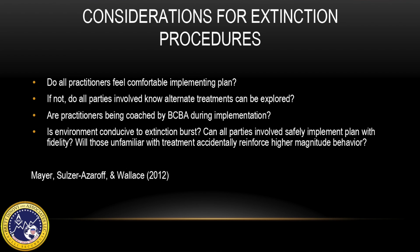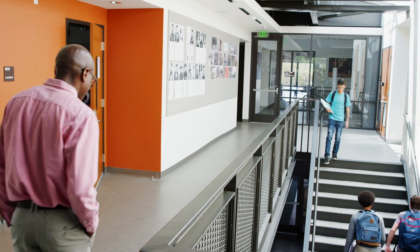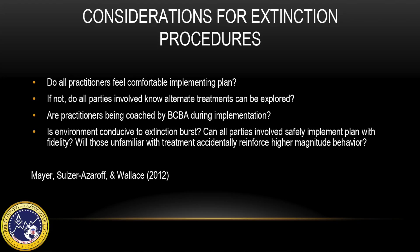Settings such as classrooms or learners' homes can be difficult to implement extinction procedures, as target behaviors are often either intermittently reinforced by peers, family members, or school staff who may be untrained on the plan, or those working with the learner are unable to tolerate an increase in the target behavior. If practitioners are unsure if they can implement an extinction procedure with fidelity, it is recommended that another intervention be used, because if implemented incorrectly, they may end up inadvertently strengthening a higher magnitude target behavior.